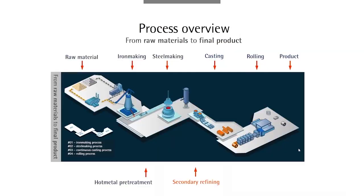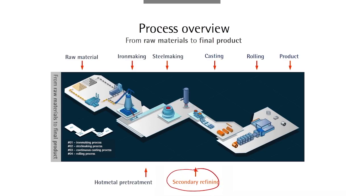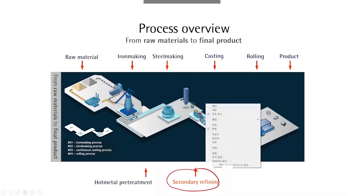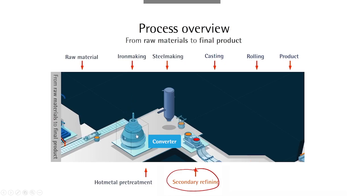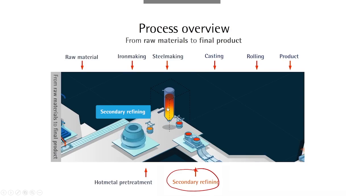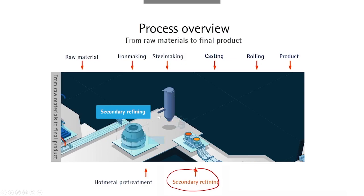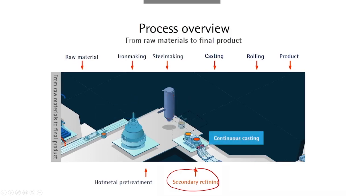This figure shows a process overview of the whole steel making plant. We have covered raw material, iron making, hot metal pretreatment, and steel making so far. In this lesson, we'll discuss the secondary refining process. Steel produced from the converter or basic oxygen furnace is delivered into the secondary refining plant, where liquid steel is further treated, and then transferred into the casting plant.